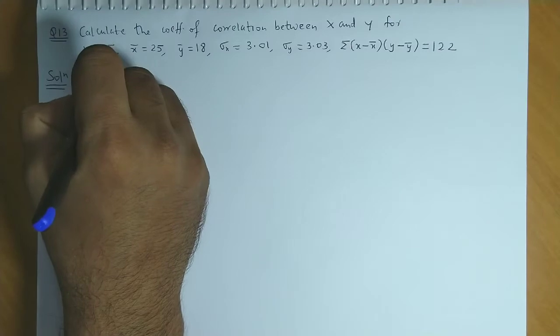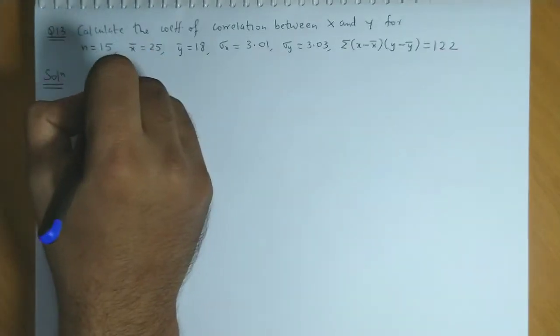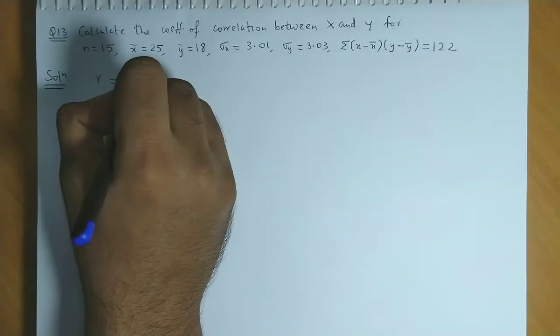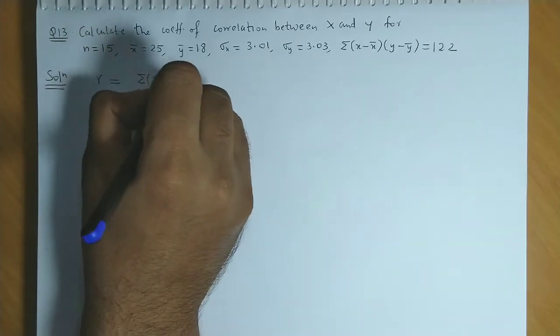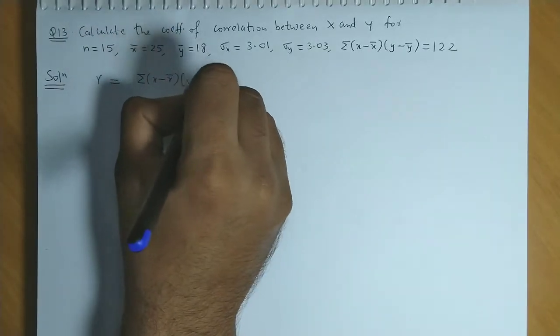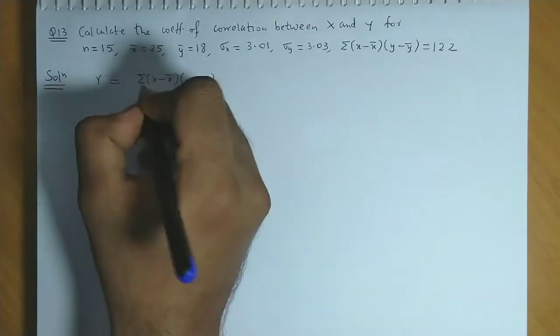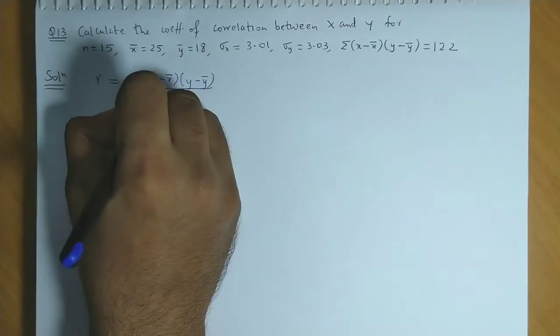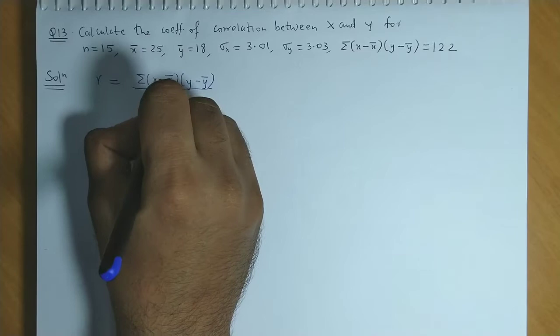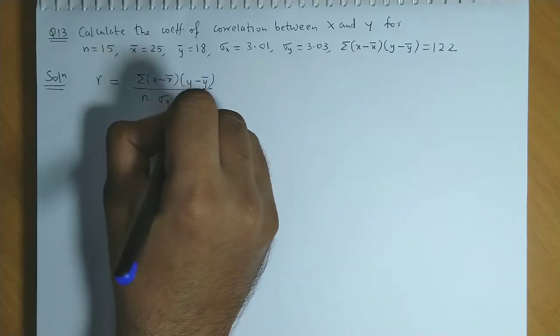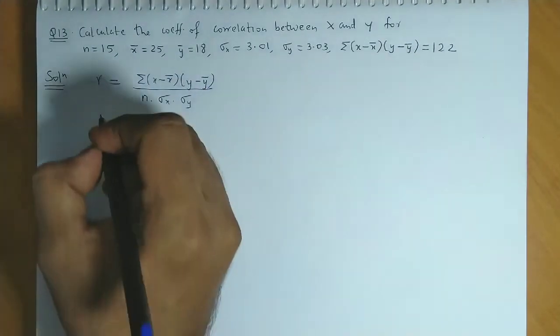Here we need to find the value of r, and the formula we are going to apply is summation of x minus x bar into y minus y bar upon n times standard deviation of x into standard deviation of y.